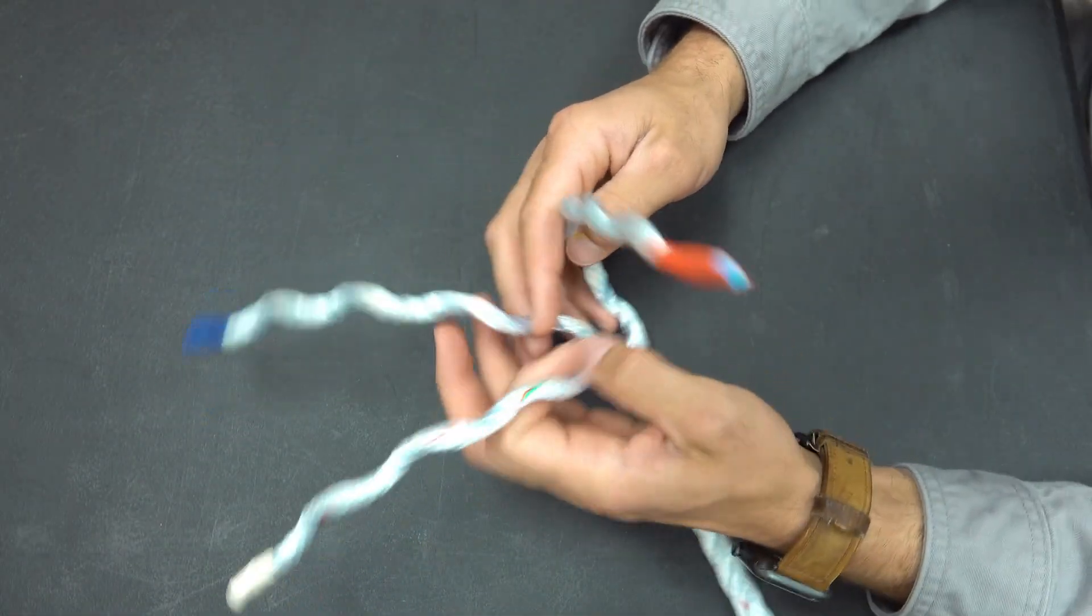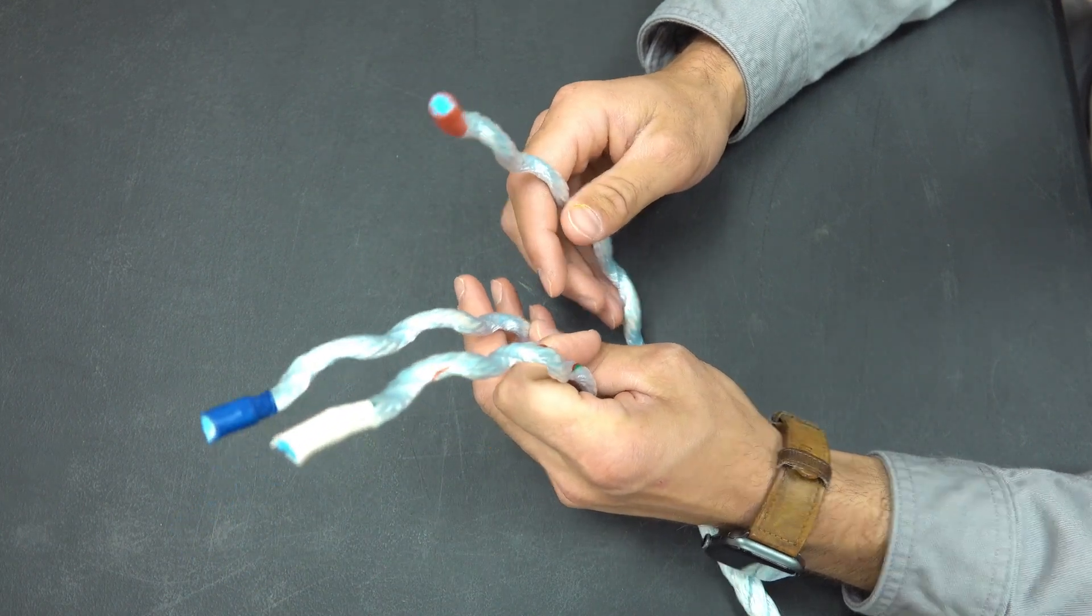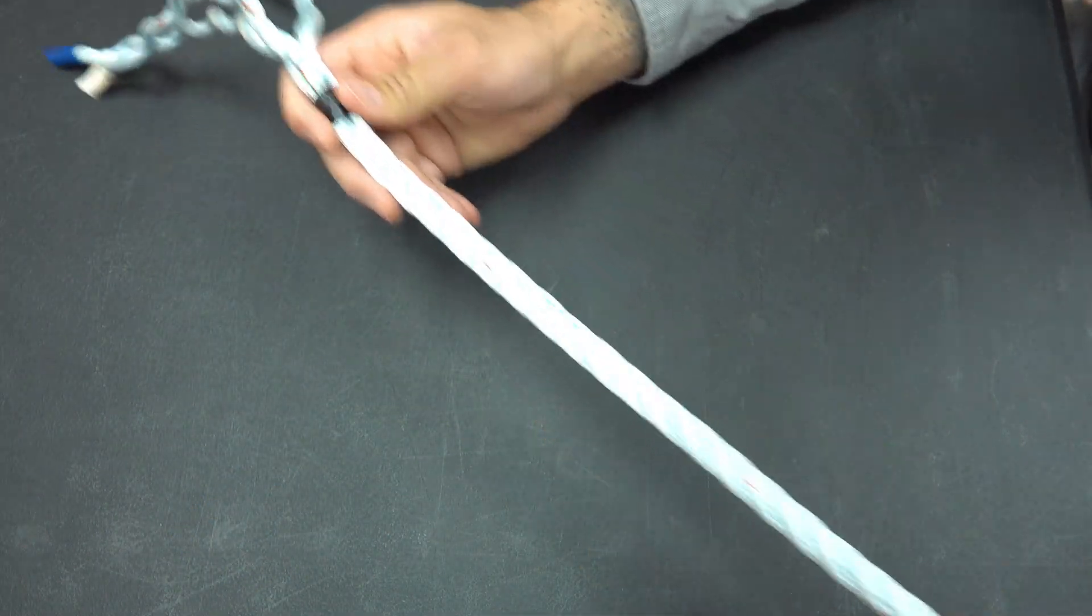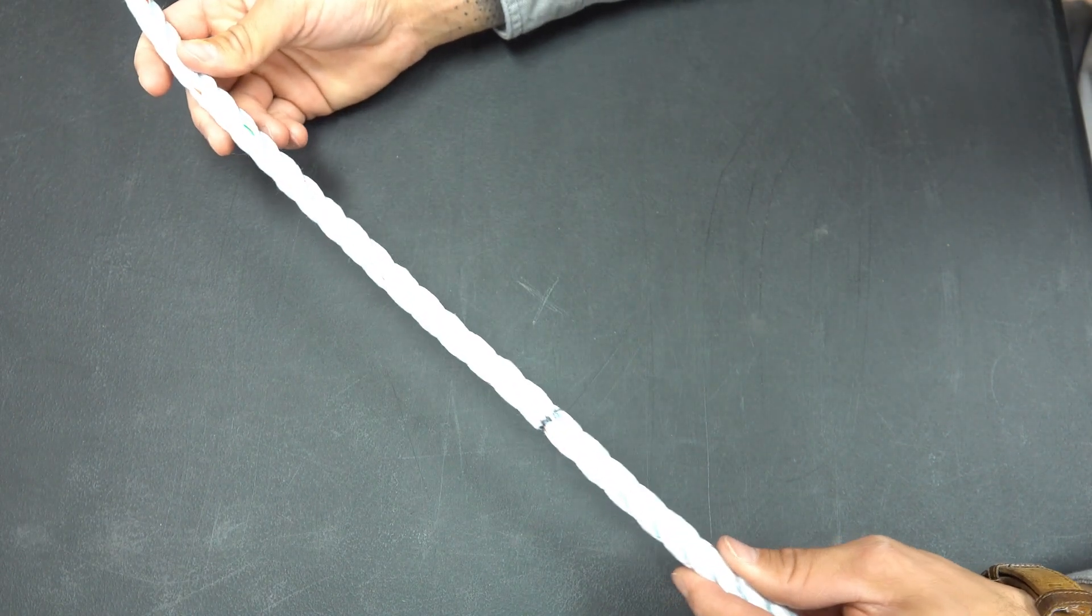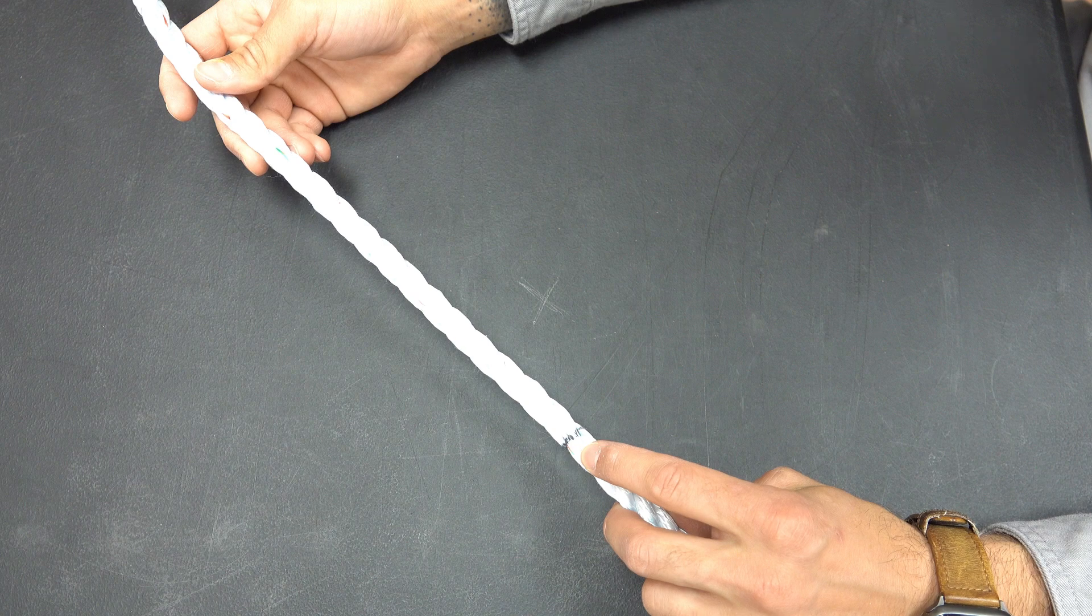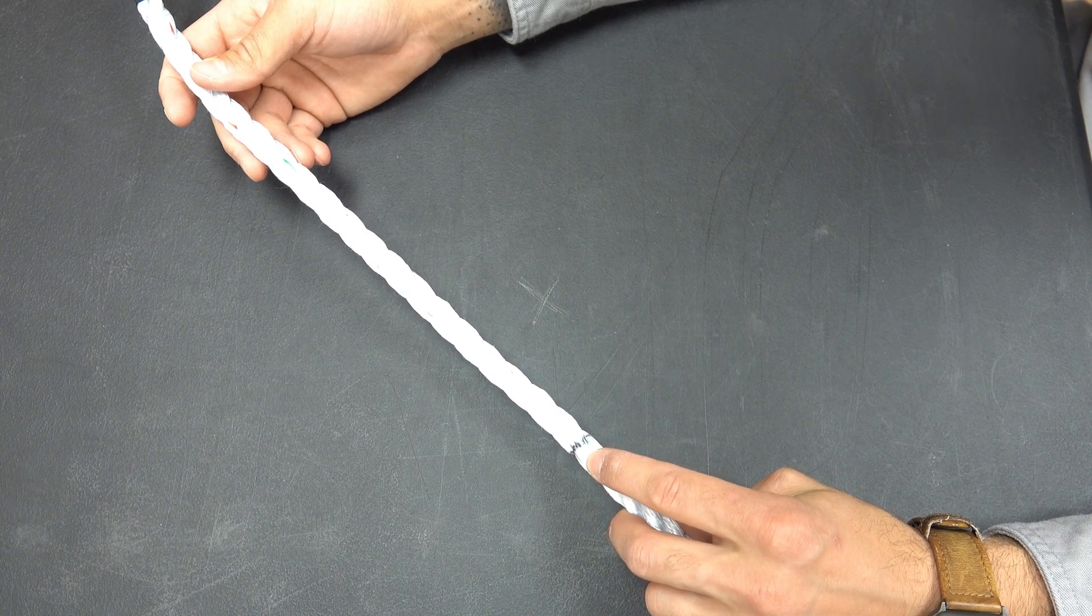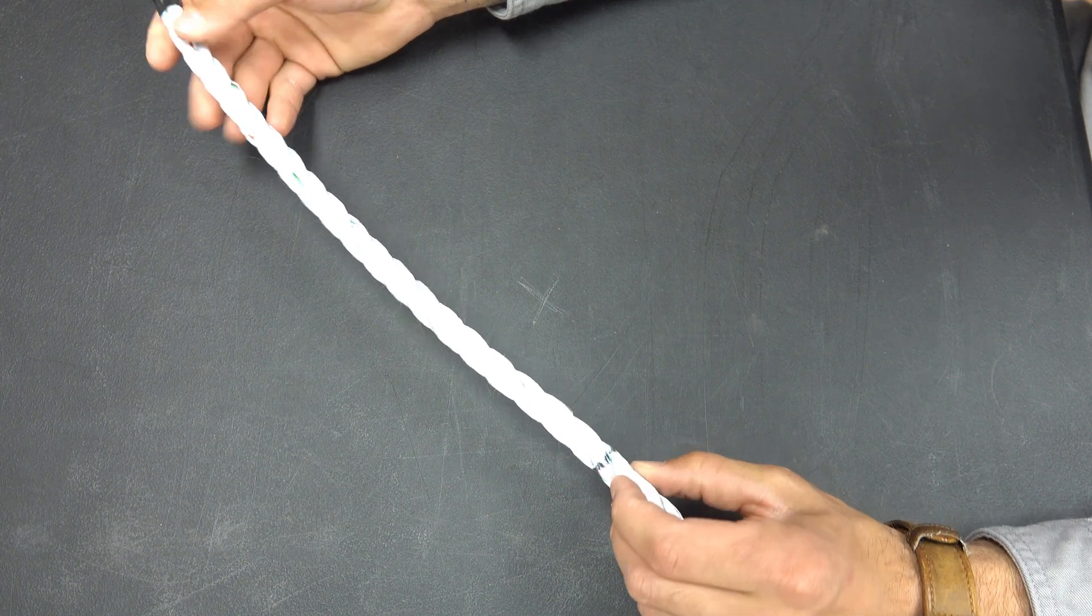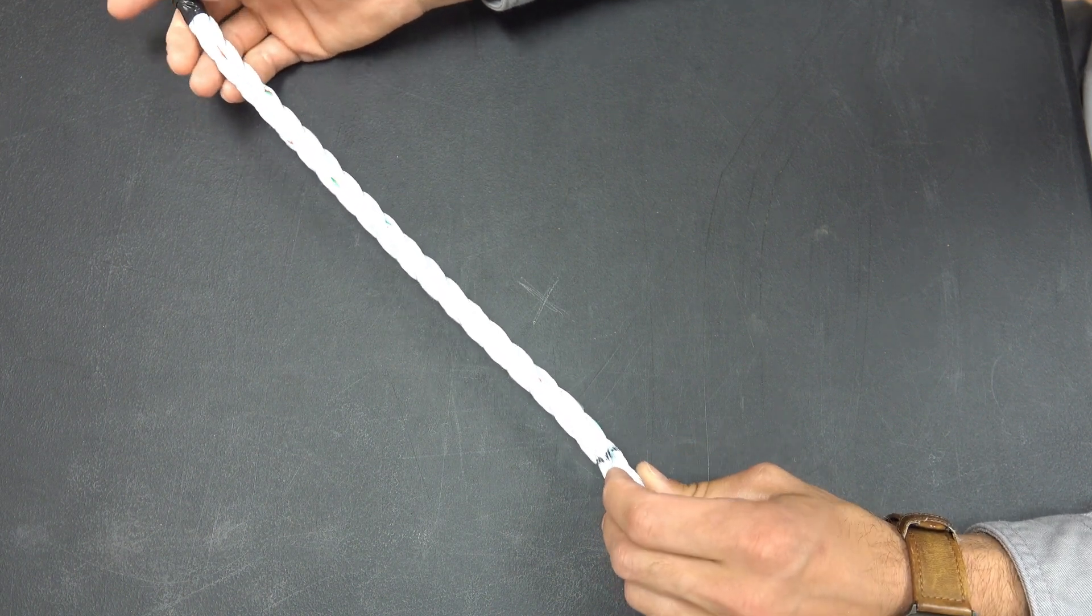We now have our rope with each one of our individual strands separated down to our tape mark. Here is our Sharpie mark that we placed on the rope earlier at that two foot mark. This is where we are going to enter with our first tape mark for making our eye splice.